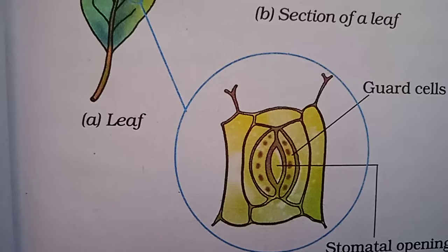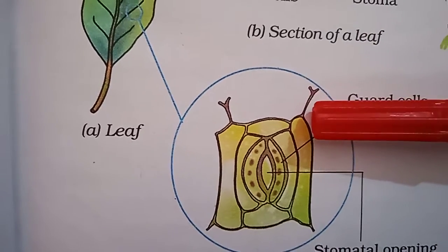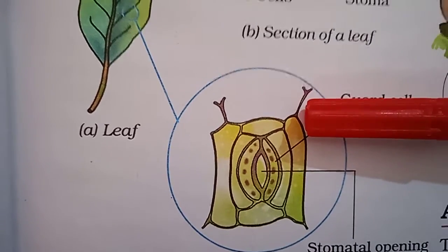Some desert plants have scale or spine-like leaves to reduce the loss of water by transpiration.